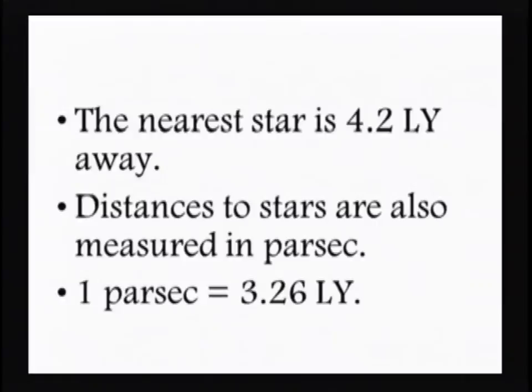The nearest star is about 4.2 light years away, obviously other than our sun. Distances to stars are also measured in parsecs, and one parsec is 3.26 light years.